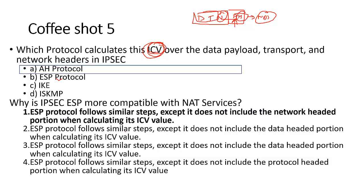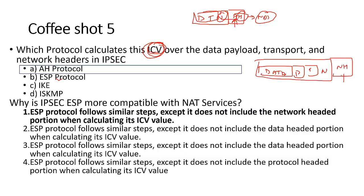Next question: why is IPSec ESP more compatible with NAT services? Note that IPSec AH does not work with NAT, but IPSec ESP does work with NAT. The reason is that ESP follows similar steps except it does not include the network header when calculating the ICV. In ESP mode, we have data, a data header, a transport header, and a network header encapsulated internally with an external network header added — and the router uses this external header for NAT.